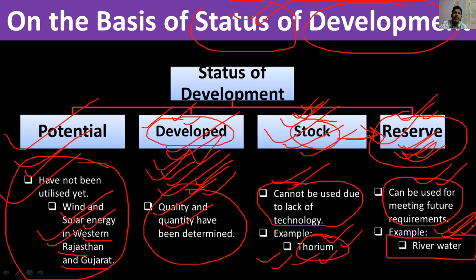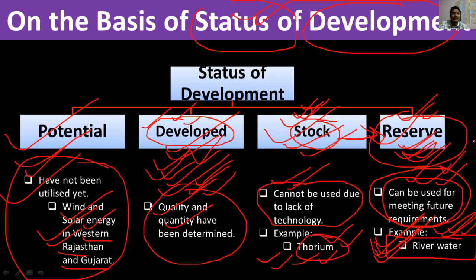Currently, electricity is mostly produced from coal and natural gas, with some hydropower from river dams. But in the future, when coal is exhausted or oil runs out, we will use river water more extensively by building dams to produce electricity. So river water is a reserve — kept for future use when needed.